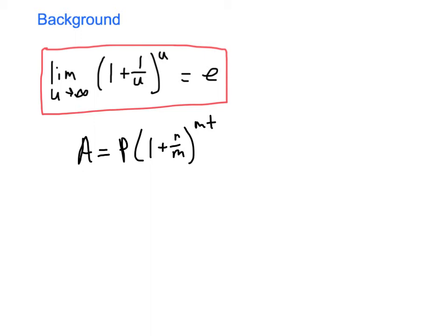So when we say we want to compound continuously, what we really want to do is we want to send m to infinity. So in essence, to compound continuously, we want to be able to find this limit: the limit as n goes to infinity of P times (1 + r/m) raised to the mt.